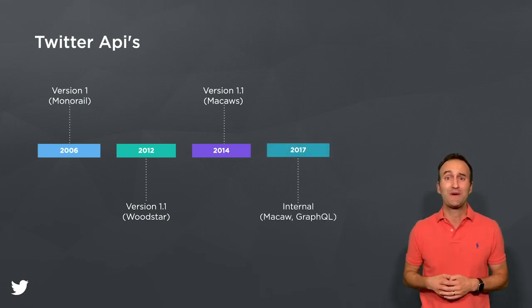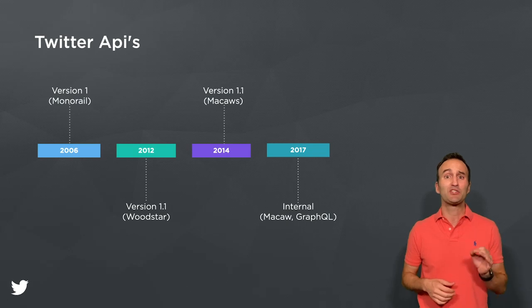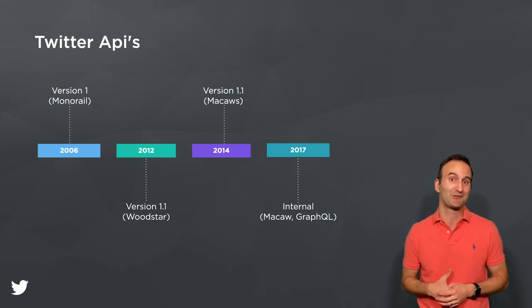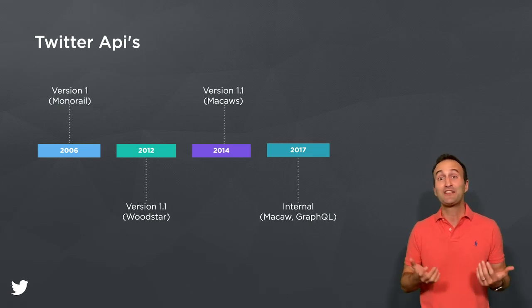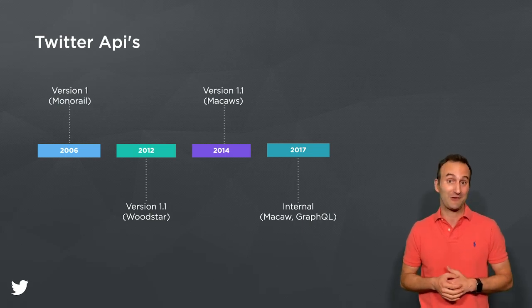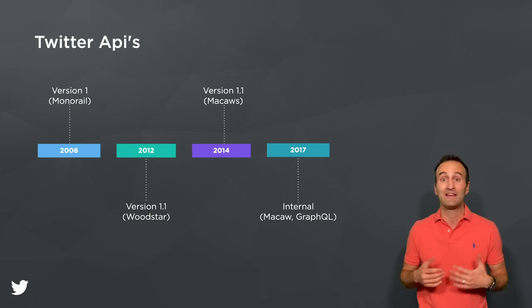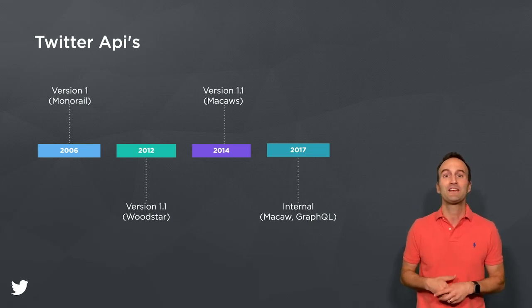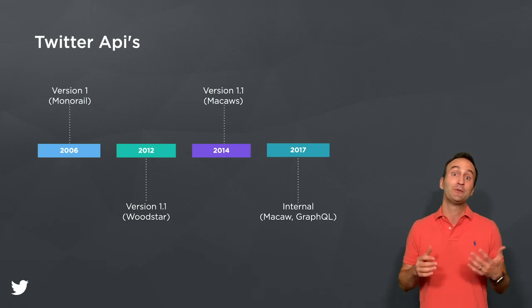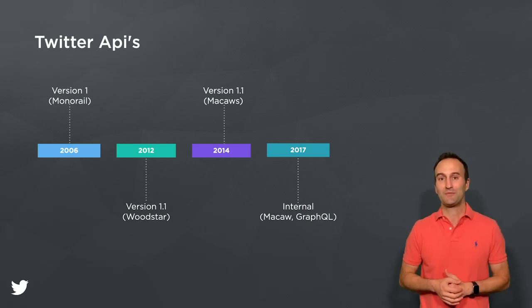Fast forward to 2017, when the Twitter app started using some new internal-only REST and GraphQL APIs. Having internal-only REST and GraphQL APIs helped our Twitter app teams move fast and iterate quickly, without having to rely exclusively on the public API, which at this point was time-consuming to change.